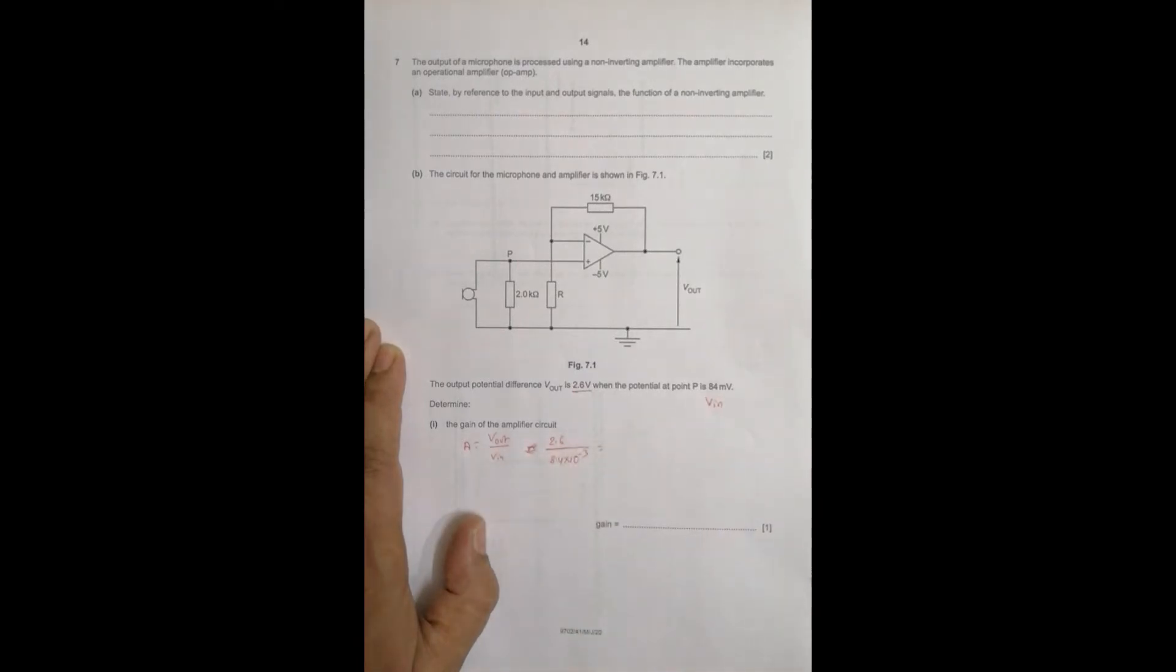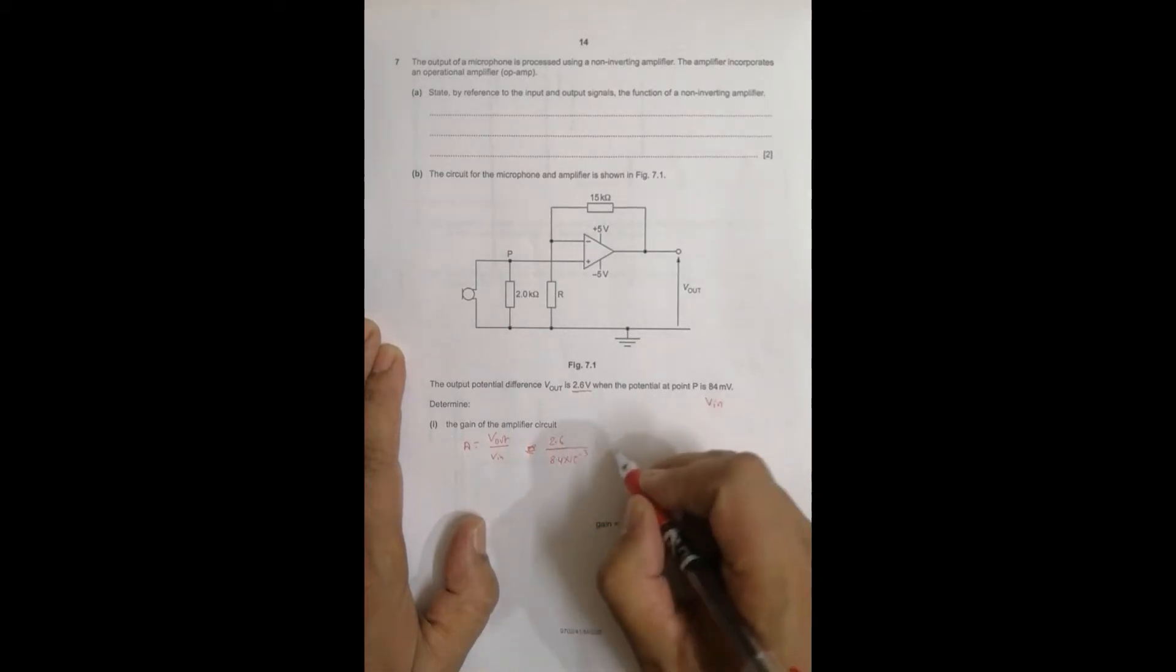So when I do this in the calculator, it's equal to 2.6 divided 8.4 exponent minus 3, equal to 30.95. I can approximate it as 31. So gain equal to 31.